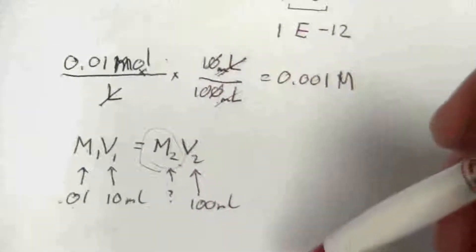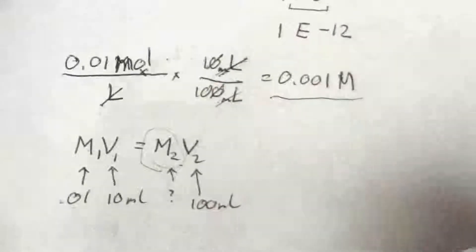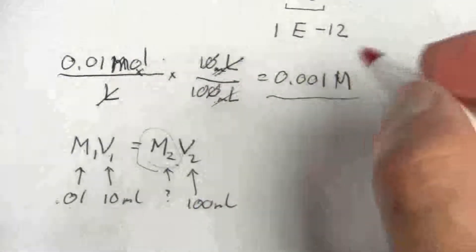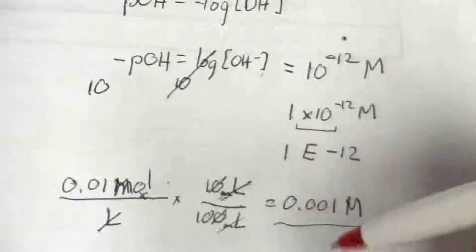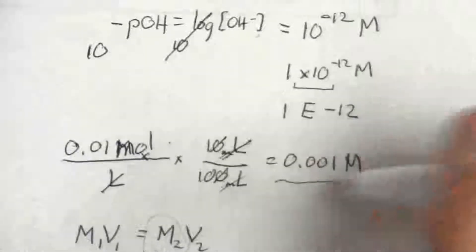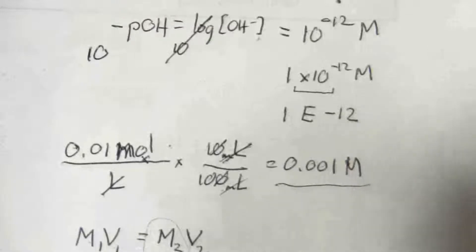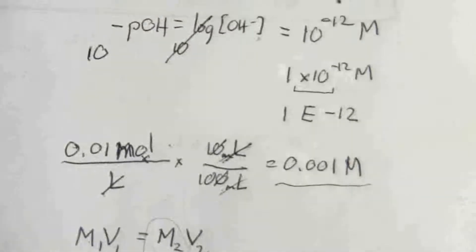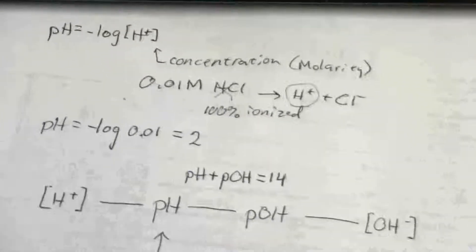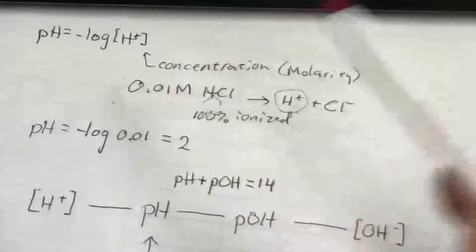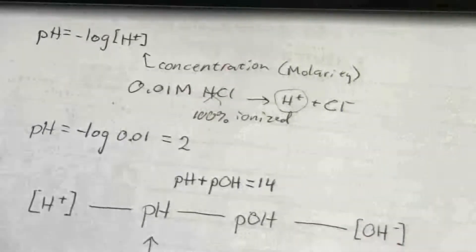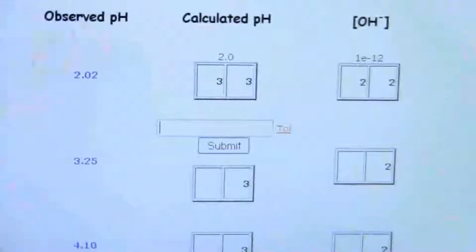So, however you want to do it, whatever works for you, you'll end up with the same result. At that point, we're right back where we were. We take the negative log of this, and we get the pH. I'm not going to do that. You have the previous example to look at for that. Instead of 0.01 molar, it'll be 0.001 molar.